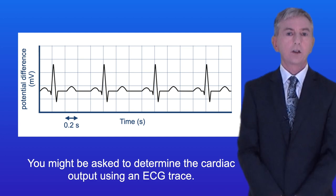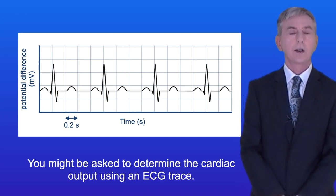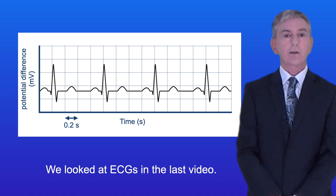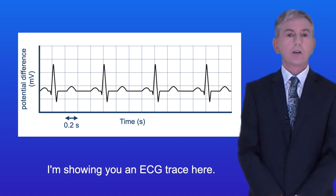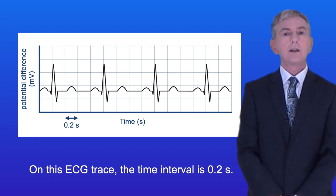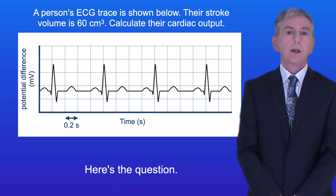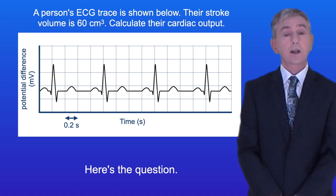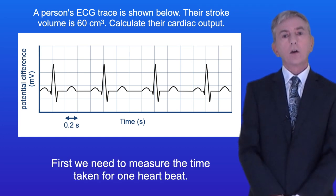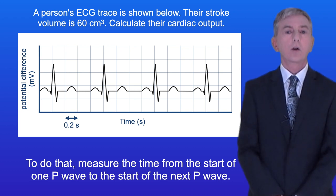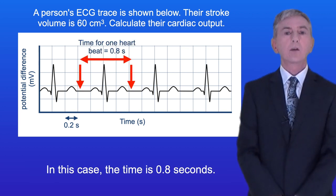You might also be asked to determine the cardiac output using an ECG trace, which we looked at in the last video. On this ECG trace the time interval is 0.2 seconds. A person's ECG trace is shown below and their stroke volume is 60 centimeters cubed. Calculate their cardiac output. First we need to measure the time taken for one heartbeat — measure the time from the start of one P wave to the start of the next P wave. In this case the time is 0.8 seconds.